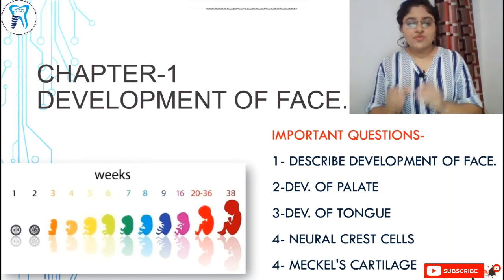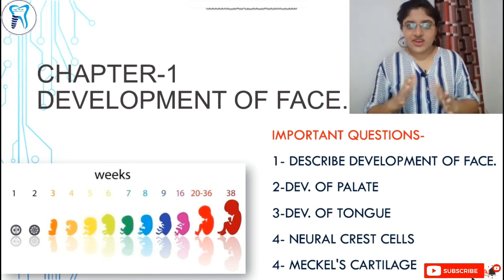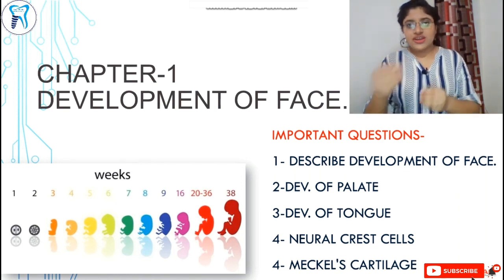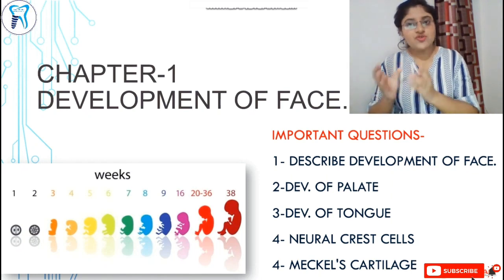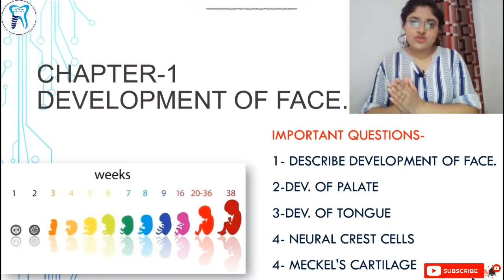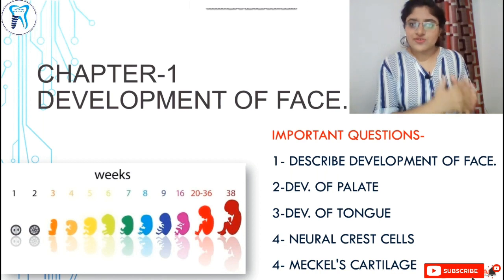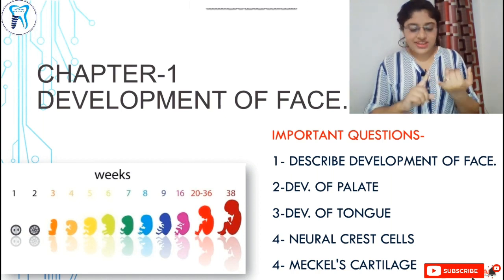Oral histology — 'oral' means structures and tissues related to our oral cavity. 'Histology' means all of our oral cavity structures are stained and observed under the microscope to see what they show. Now, what is in our oral cavity? First of all, teeth. What are the tissues in our teeth? Dentine, enamel, cementum, and pulp.